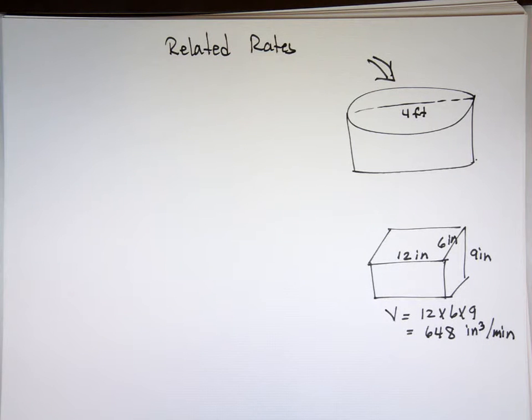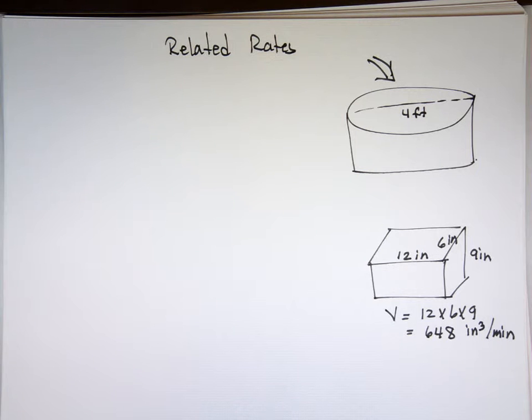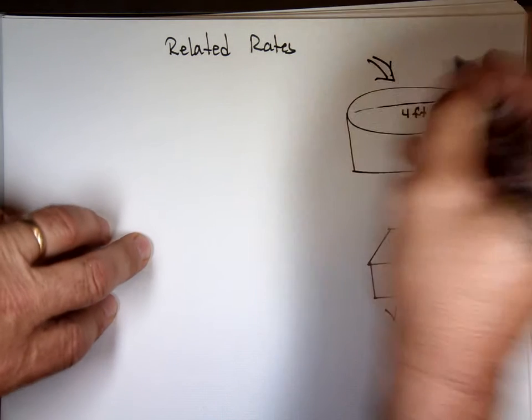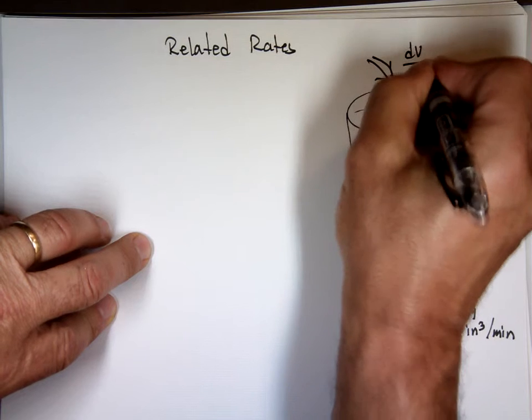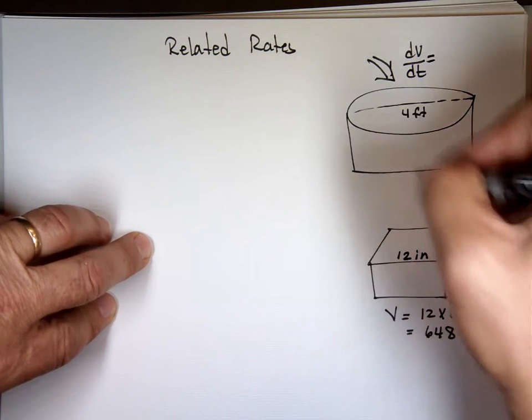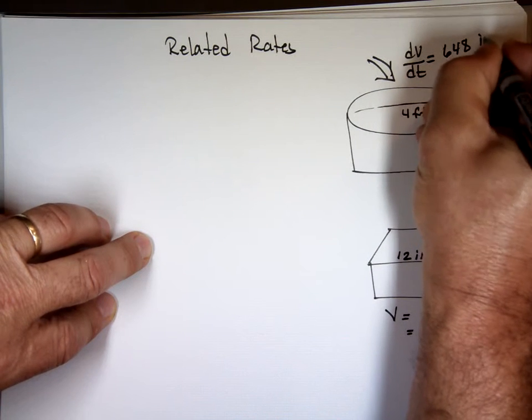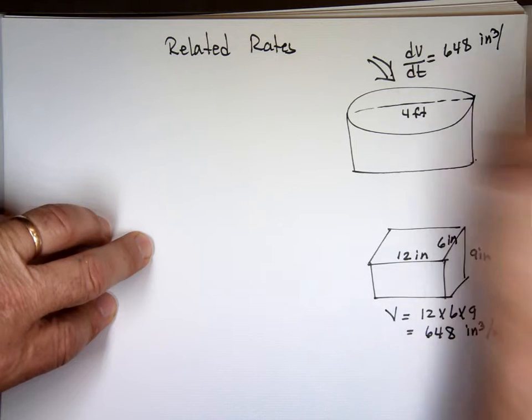So we're using a bigger container here. You gotta fill it with water, carry it, and dump it into that. That's 648 cubic inches per minute. So we know the volume is changing here at the rate, it's increasing at the rate of 648 cubic inches per minute.